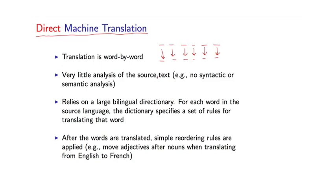There was very little analysis of the source language text. So you can imagine that it might be useful to maybe parse or at least tag the source language text to get some idea of the structure of the underlying sentence you're trying to translate. But these direct machine translation systems really did away with any analysis of this form. They relied on very large bilingual dictionaries. I'll give an example in the next slide, where for each word in the source language, you would specify a set of rules for how to translate that word into the target language.